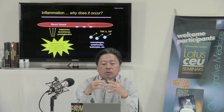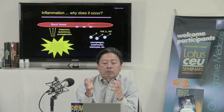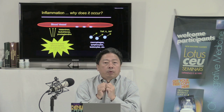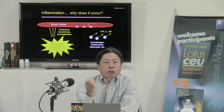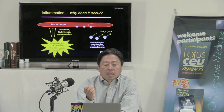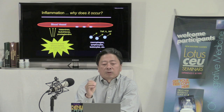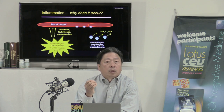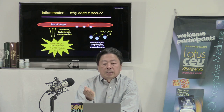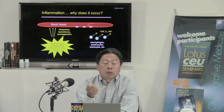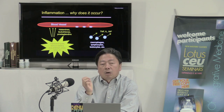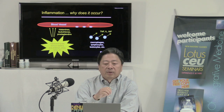If the macrophages, leukocytes, and lymphocytes are able to take care of the problem, that may be the end. But sometimes the stimulus may be very specific, so the body needs something additional. What happens is these immune cells will secrete additional substances to call for help: TNF (tumor necrosis factor), IL (interleukin), and INF (interferon). These are more specific responses that target a specific area.